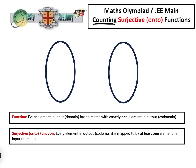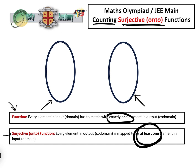Today we're going to be dealing with counting surjective or onto functions. Just a quick revisit: a function is where every element in the input domain has to match with exactly one element in the output codomain. A surjective or onto function is one where every element in the output is mapped to by at least one element in the input.